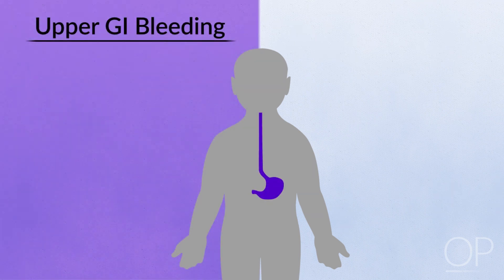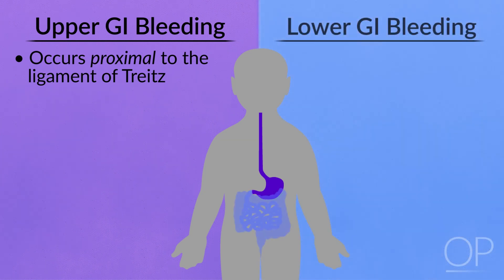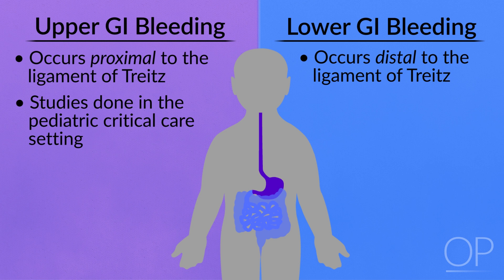Gastrointestinal bleeding is classified based on its origin. Upper gastrointestinal bleeding is defined as bleeding that occurs proximal to the ligament of Treitz. Lower gastrointestinal bleeding occurs distal to the ligament of Treitz. The incidence of GI bleeding in children is not well established in the general population. In upper GI bleeding, most studies have been done in the pediatric critical care setting, with reports ranging from 6.4% to 25% of all ICU admissions.